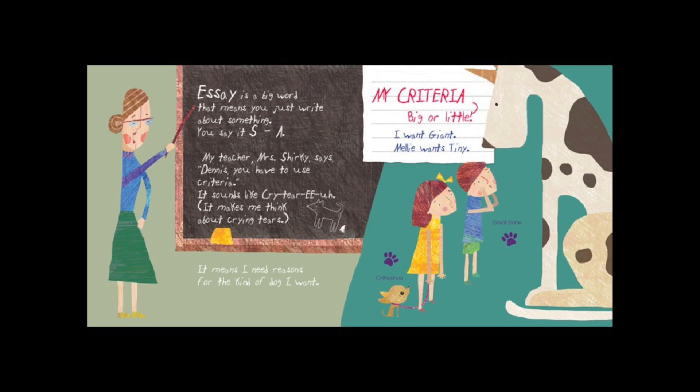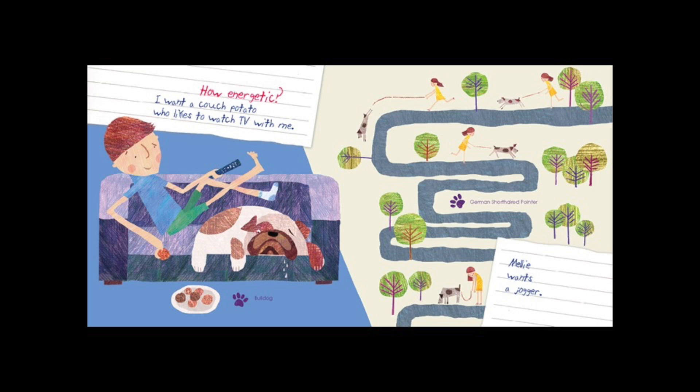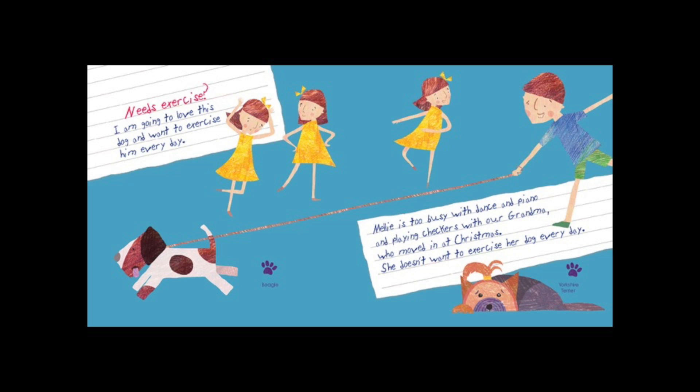My criteria: big or little? I want giant; Mellie wants tiny. How energetic? I want a couch potato who likes to watch TV with me; Mellie wants a jogger. Needs exercise? I am going to love this dog and want to exercise him every day. Mellie is too busy with dance and piano and playing checkers with Grandma, who moved in at Christmas.